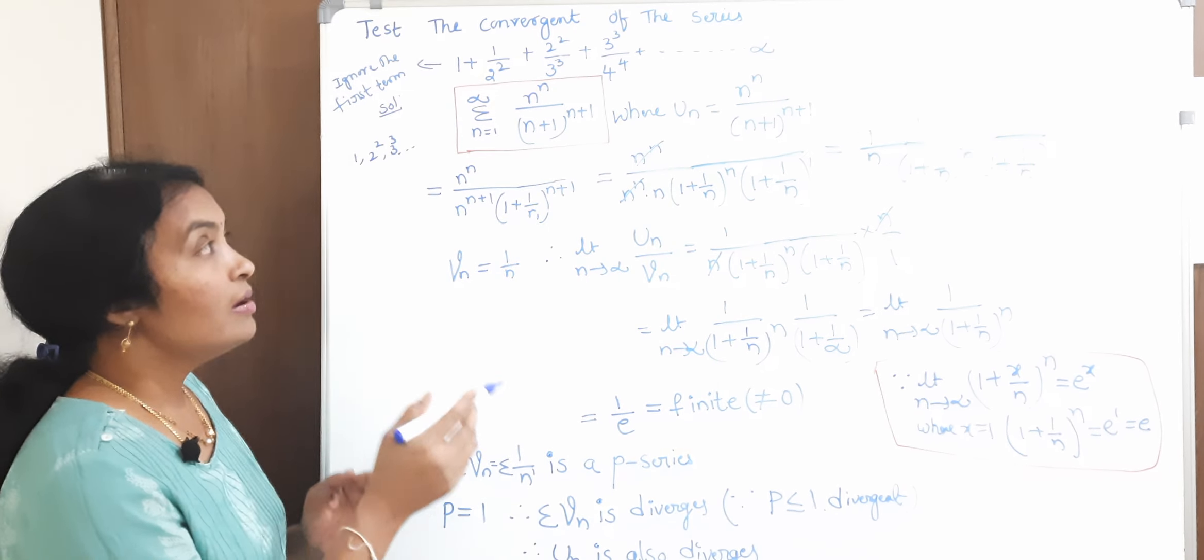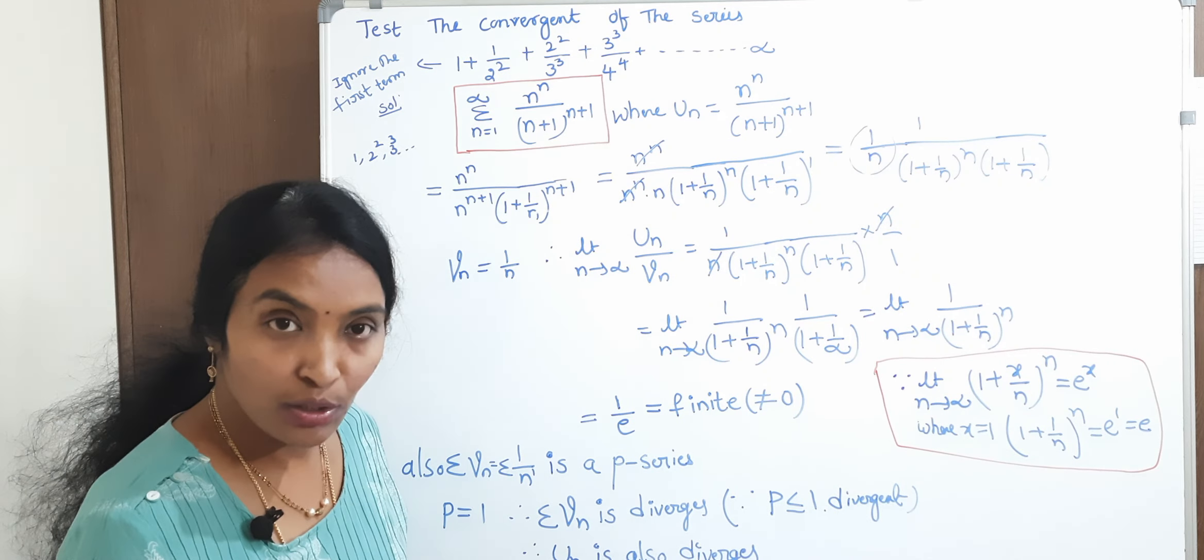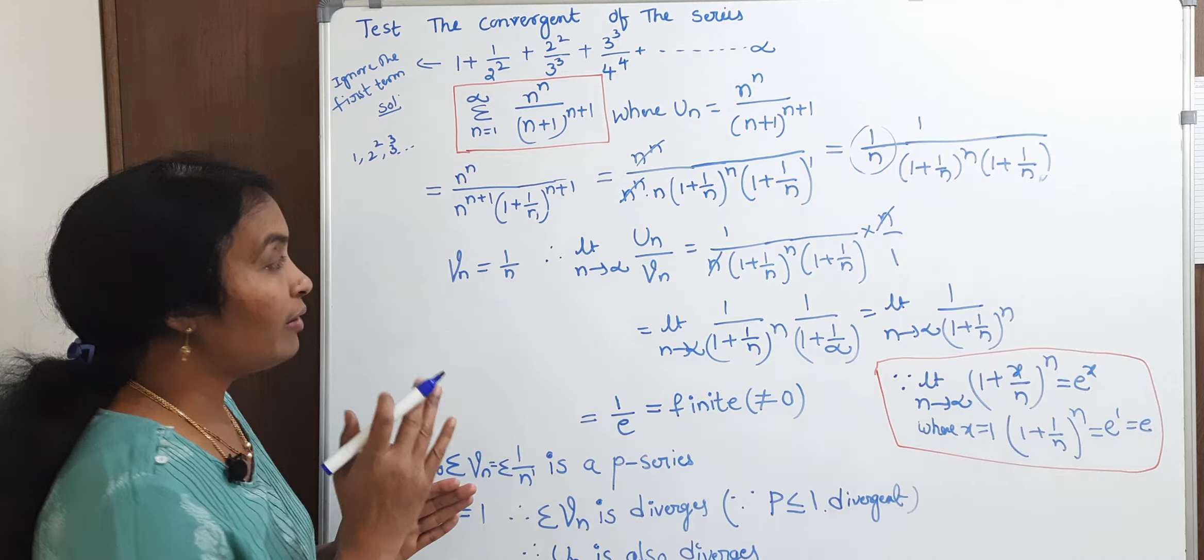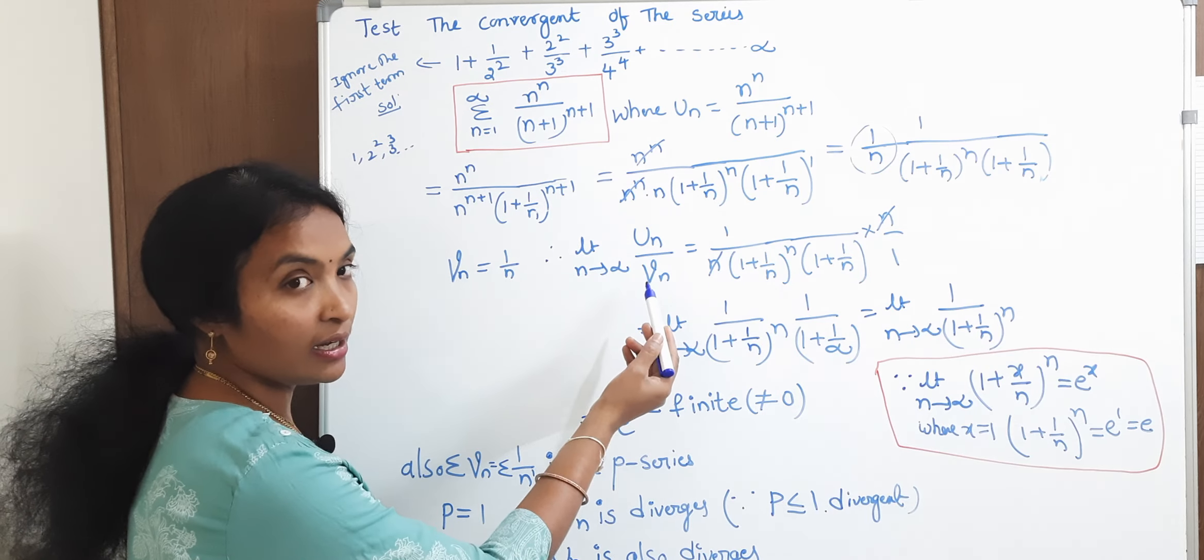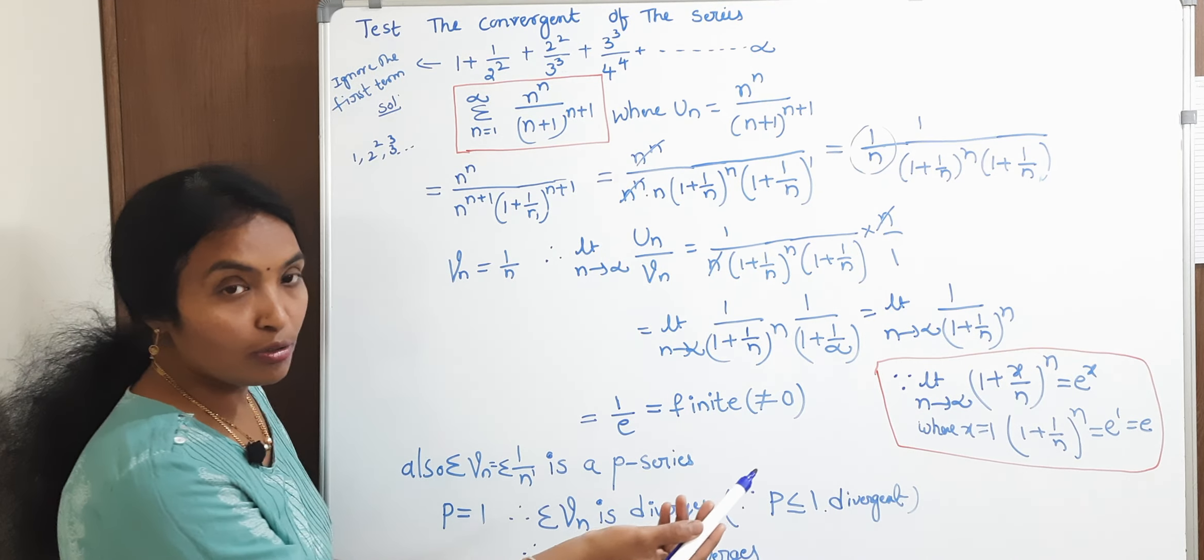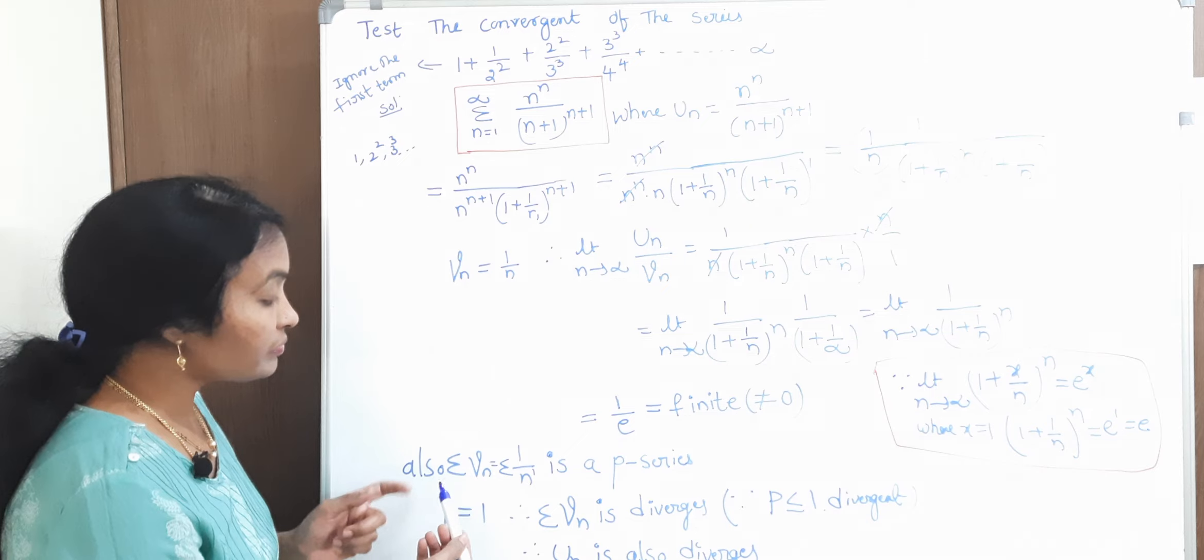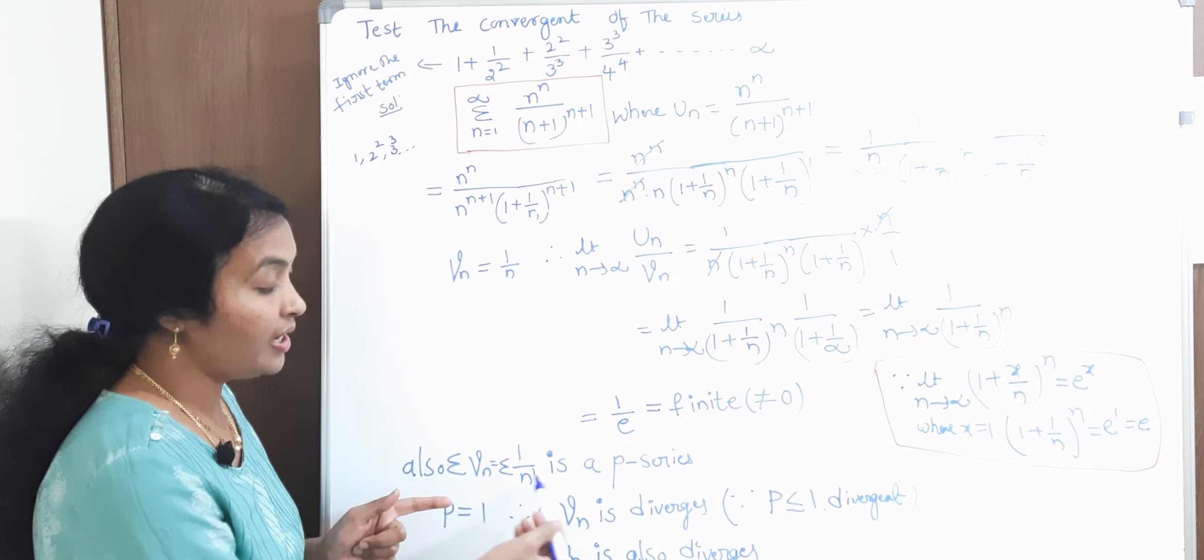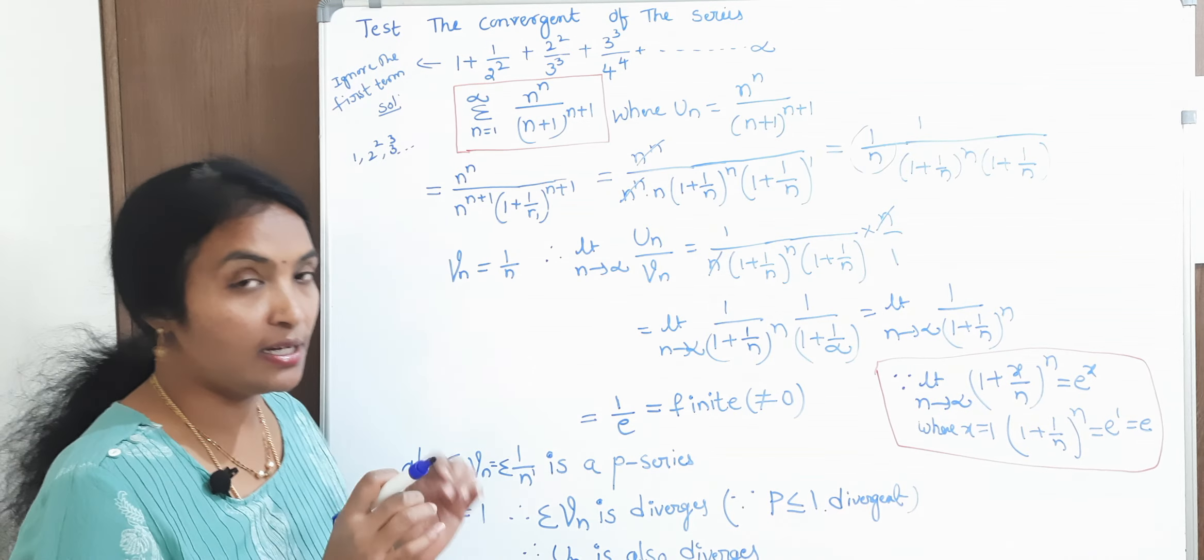Comparison test, first, you need to write the summation U_n. After that, what we have to find? U_n by V_n. Okay, after that, what we have to simplify? After all, what do we have to do? V_n nature, I will explain. Listen carefully.